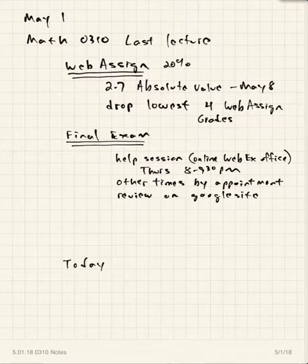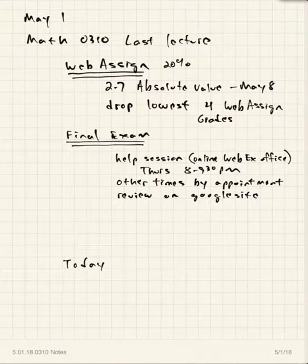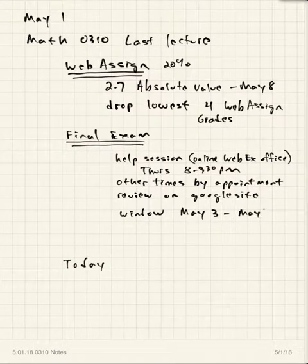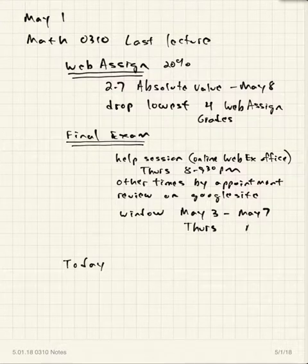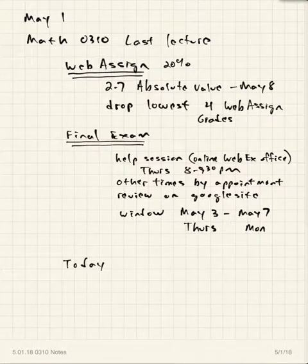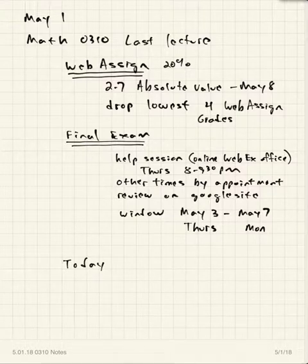Show all your work — there's no multiple choice or anything like that. The window for taking the final exam is May the 3rd through May the 7th. May the 3rd is Thursday of this week; May the 7th is Monday of next week. This window shuts down on Monday so that I have time to get the exams back and graded.